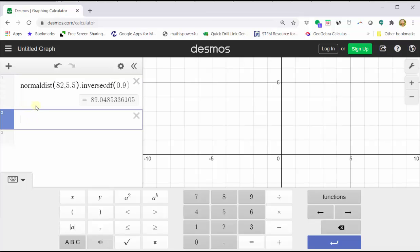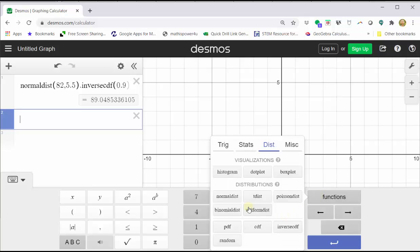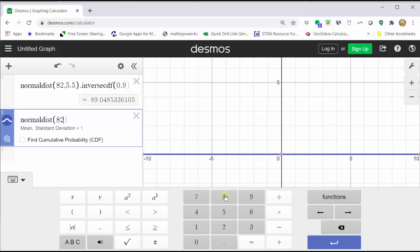To verify this, we will first graph the normal distribution where the mean is 82 and the standard deviation is 5.5. To do this, click functions, select normal dist, enter the mean of 82 comma, the standard deviation of 5.5, close parenthesis.